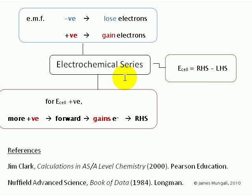And finally, to work out the reaction which gives a positive cell EMF, look for the more positive standard electrode potential. This will go in the forward direction, gains electrons, and is on the right-hand side of the cell diagram.